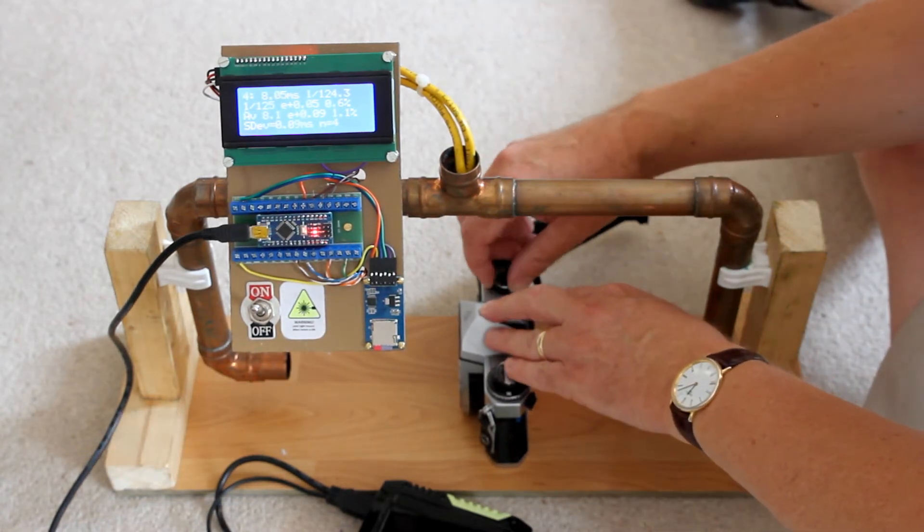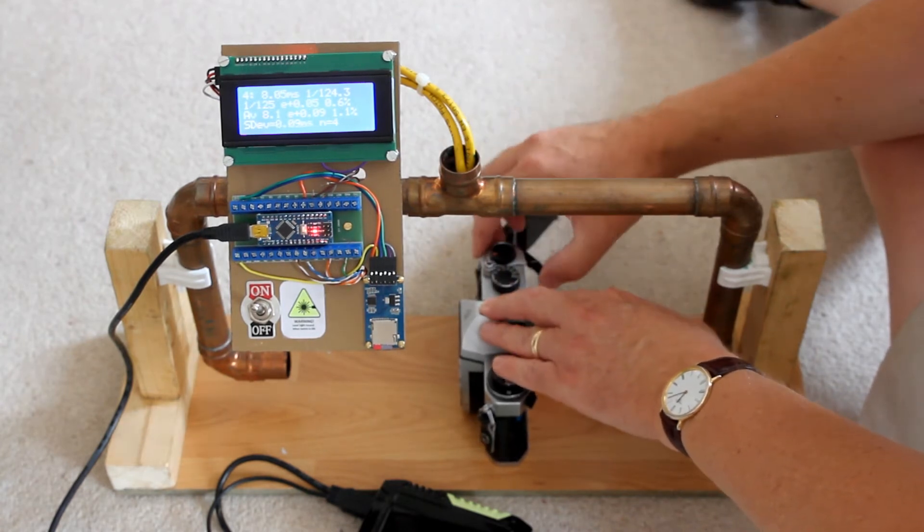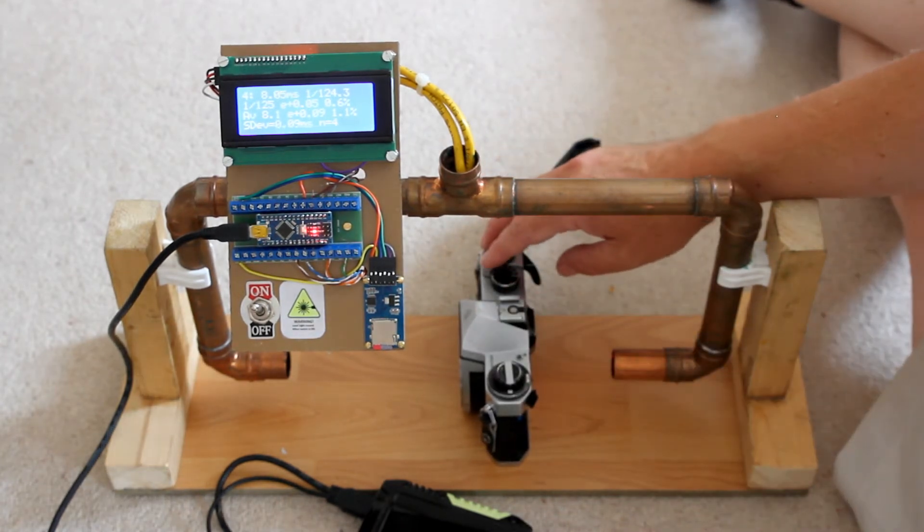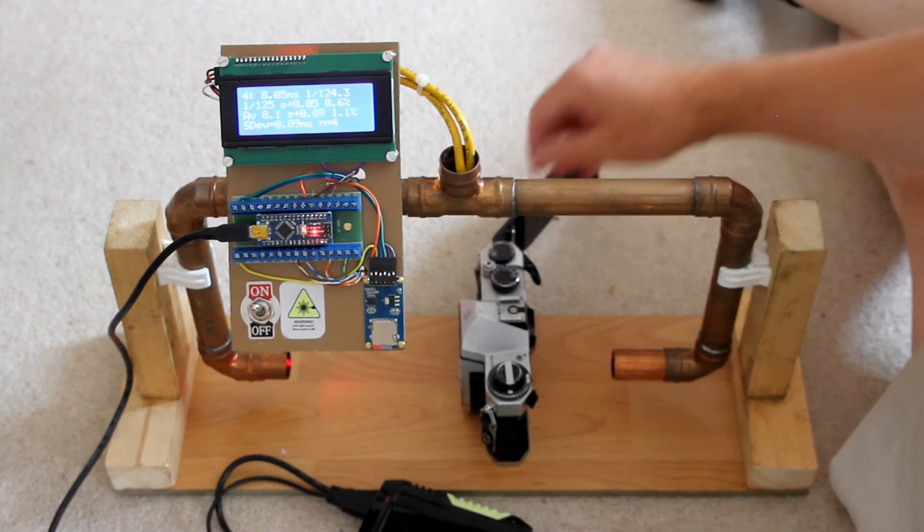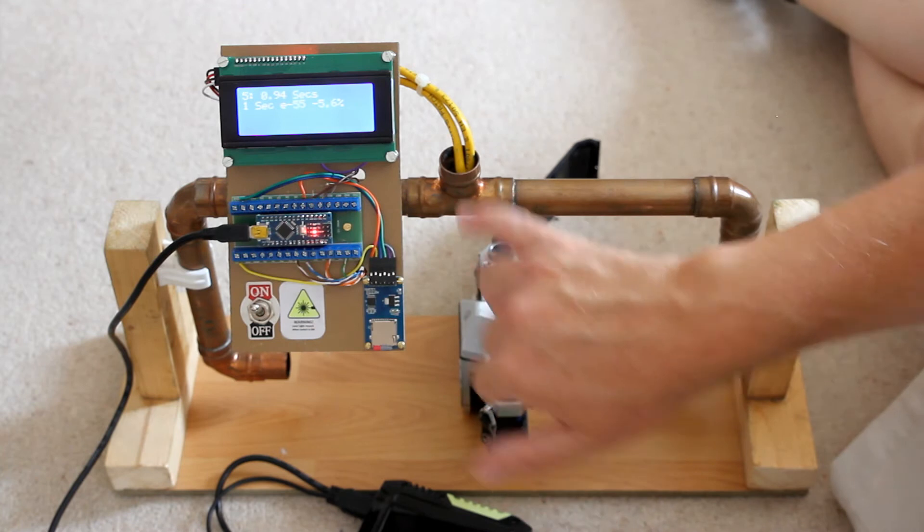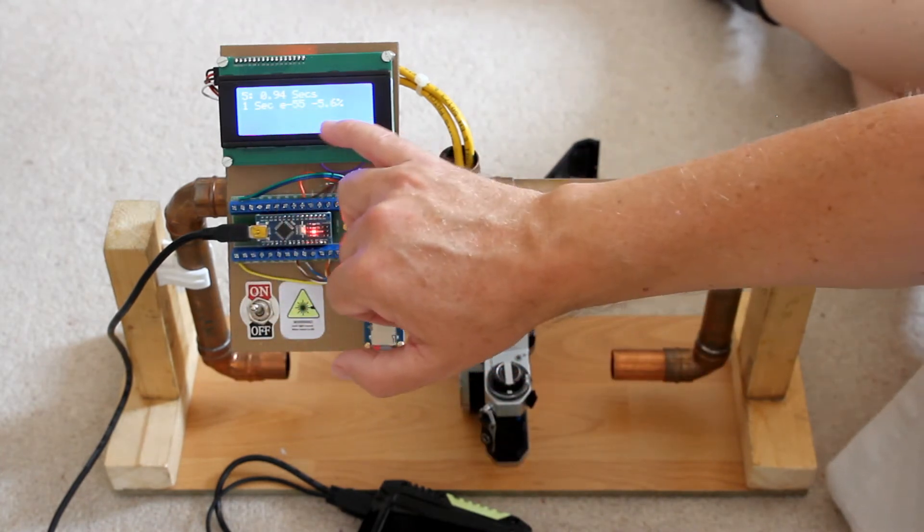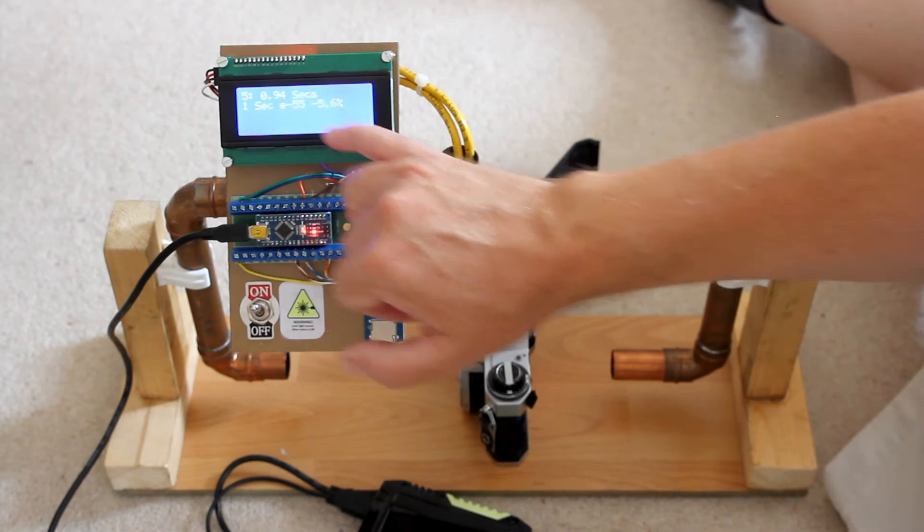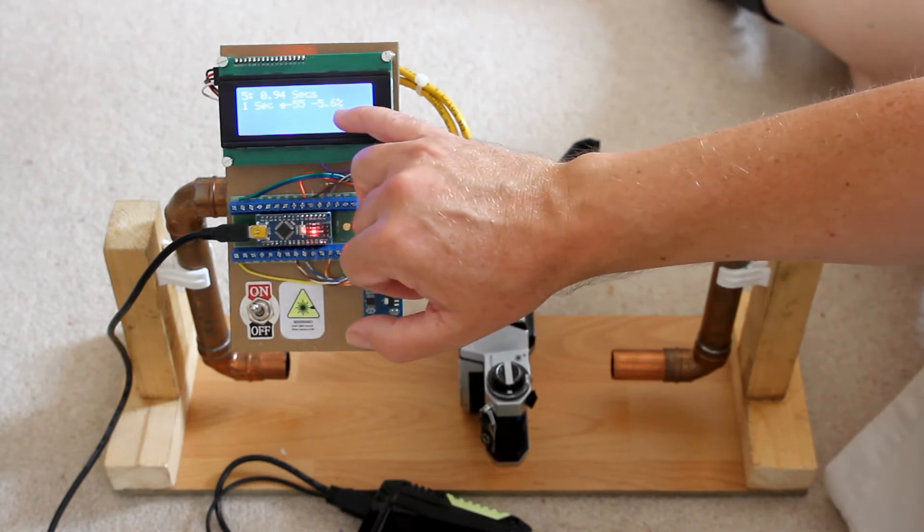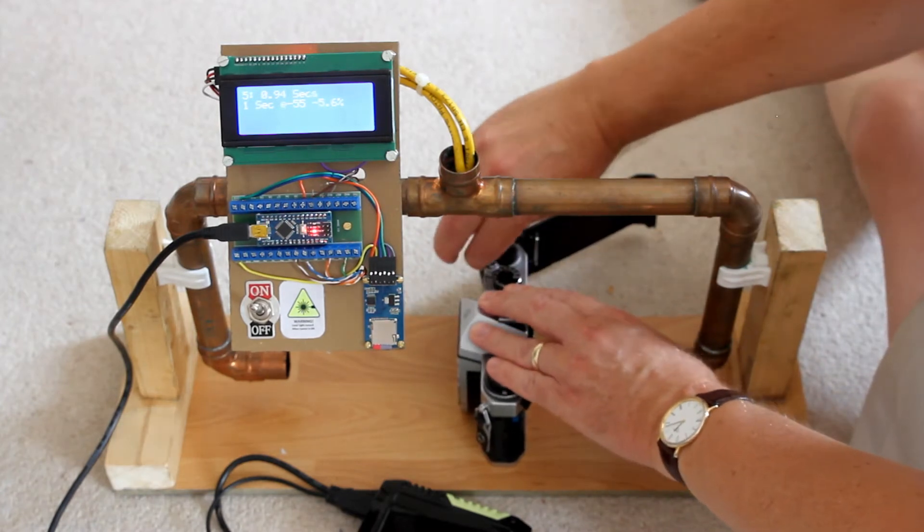So for example if I turn the shutter speed right down to one second it'll just automatically try and adjust to that on the program. So exposure 5 was 0.94 seconds. You notice the display is now recording in seconds not in milliseconds. We've got an error of 55 milliseconds here and 5.6 percent short. And again we can go through the same sequence.